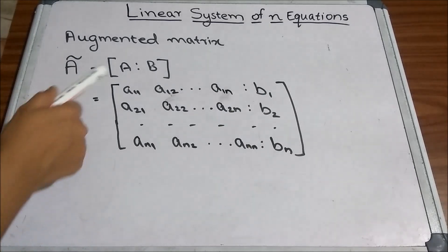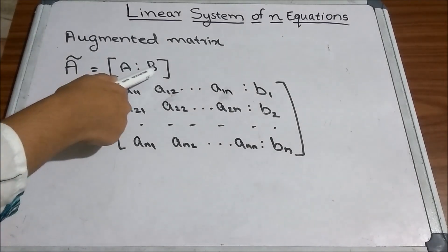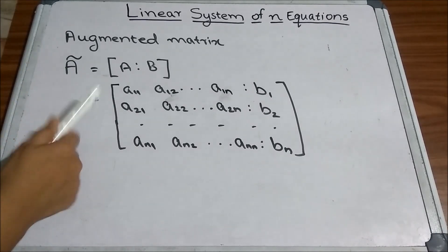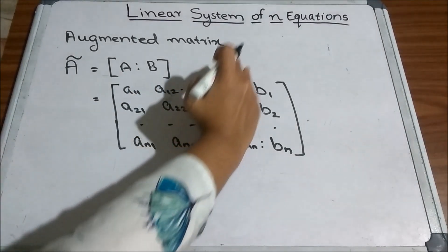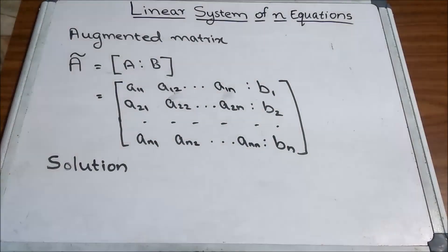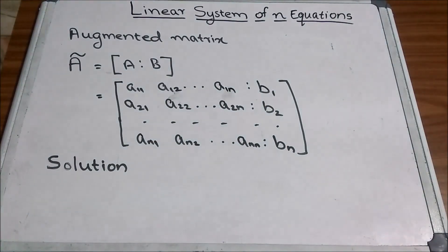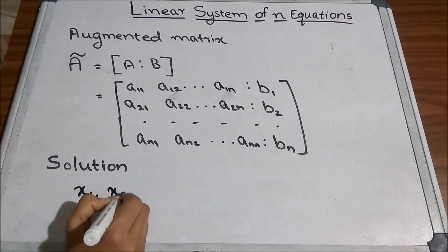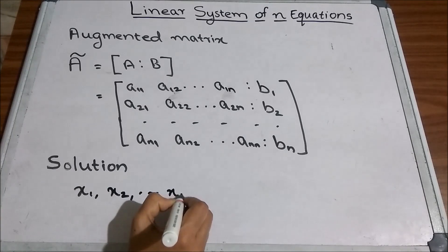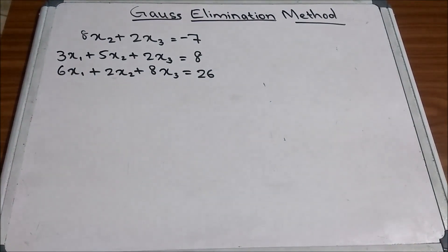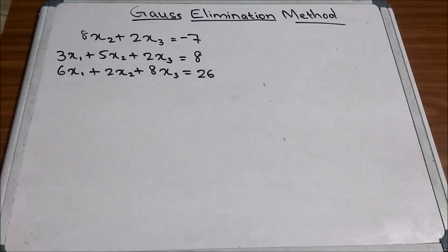The coefficient matrix A together with the constants b is called the augmented matrix — it contains all the coefficients together with the constants. A solution of this set of equations is a set of numbers x1, x2, ..., xn that satisfy all the given n equations. Let us now discuss the first method of solving a system of equations: the Gauss elimination method.